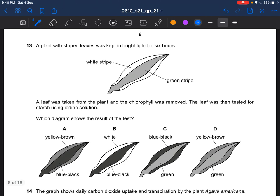Next question. A plant with striped leaves was kept in bright lights for 6 hours. A leaf was taken from the plant and the chlorophyll was removed. The leaf was then tested for starch using iodine solution. Which diagram shows the result of the test. At this area over here, photosynthesis can occur since there is chlorophyll to absorb light. So if photosynthesis can occur, starch will be produced. Hence it would show a positive result. While over here, there is no chlorophyll. So it can't absorb any sunlight. No photosynthesis, no starch is produced. So we show a negative result. A positive result would be from yellow-brown, which is the colour of the iodine solution to blue-black. So the answer would be A.